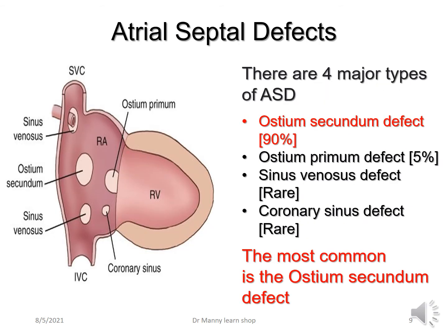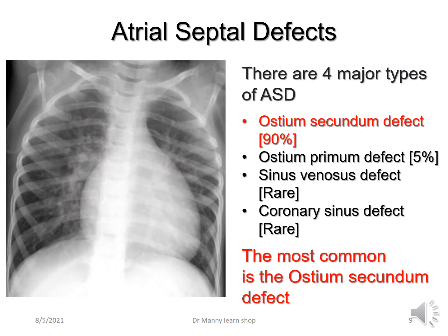There are four major types of ASD — atrial septal defect. The ostium secundum defect occurs in 90% of situations and is the most common. The ostium primum defect accounts for 5%. The sinus venosus defect is reasonably rare, and the coronary sinus defect is also rare. The ostium secundum ASD can also result in cardiomegaly.